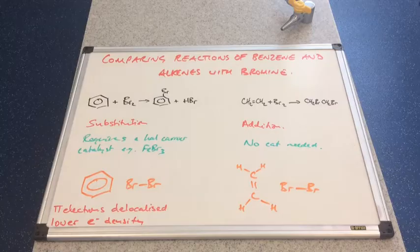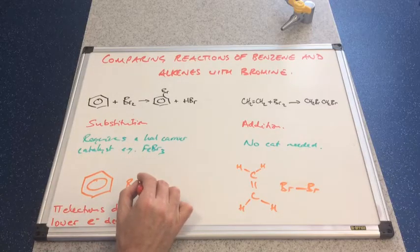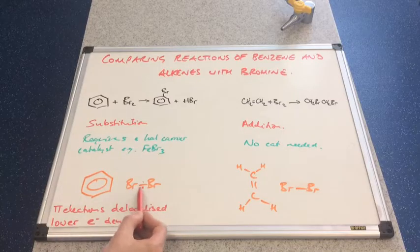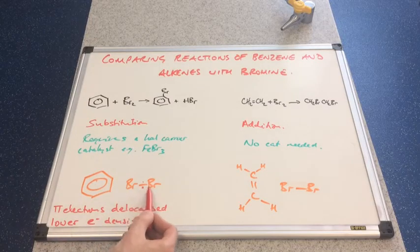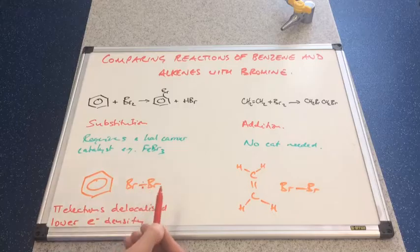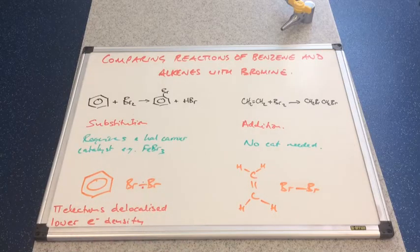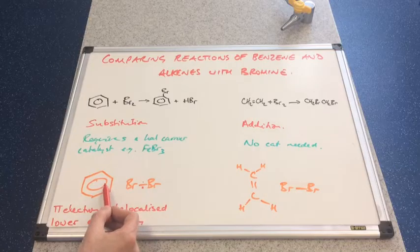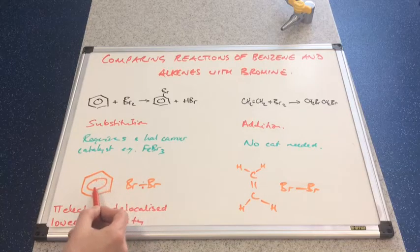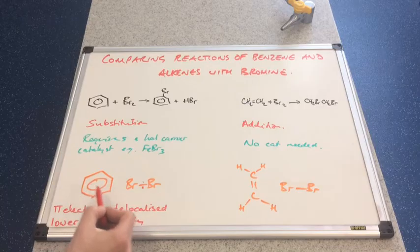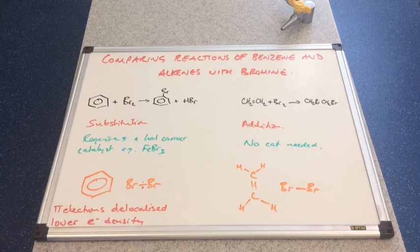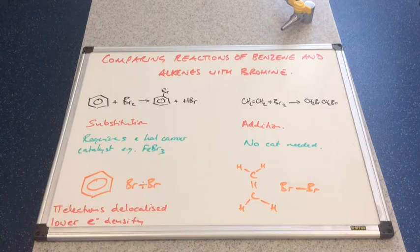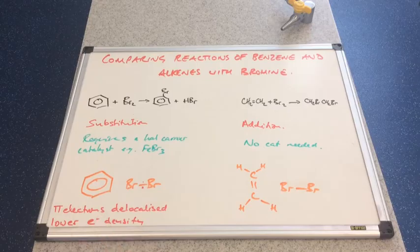And the knock-on effect of that is, if you think about the electron pair that makes this covalent bond between these two bromine atoms, this is a non-polar molecule because of the identical electronegativities of the two Br's. There is not sufficient repulsion from the pi electron cloud to generate a dipole in this molecule. So this remains non-polar.